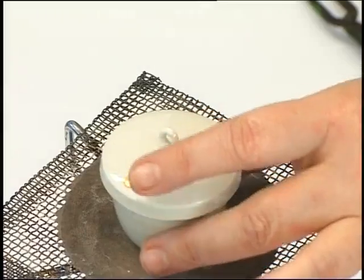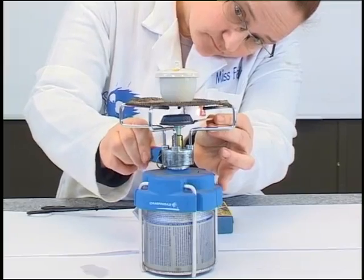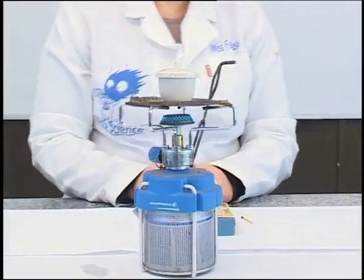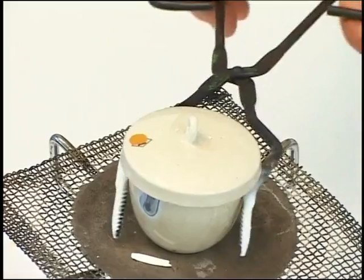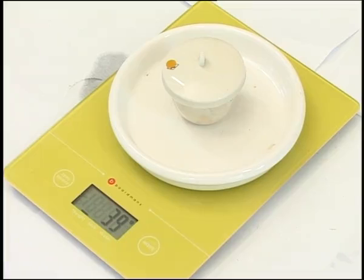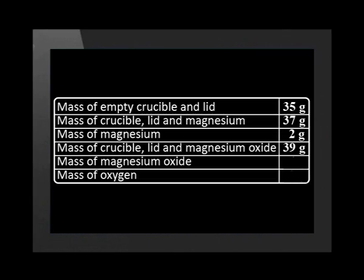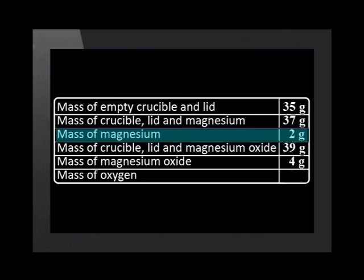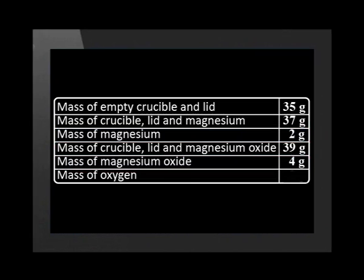Now let us place the crucible onto a clay triangle. We heat the crucible gently at first and then more vigorously. Now that the reaction is complete, let us measure the mass of the crucible, lid and product inside. The mass of the crucible, lid and magnesium oxide product together is 39 grams. We can determine the mass of the oxygen used in the reaction by subtracting the mass of the magnesium from the mass of the magnesium oxide. The mass of the oxygen used up is 2 grams.